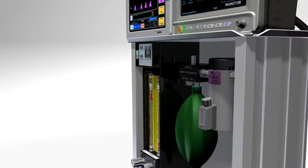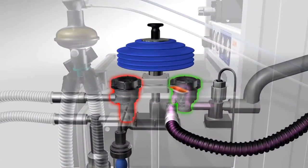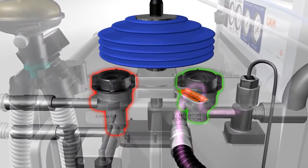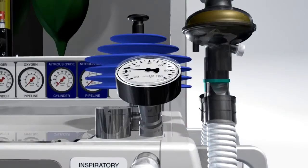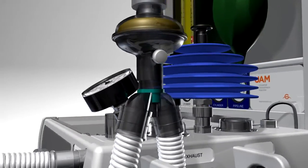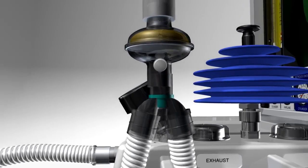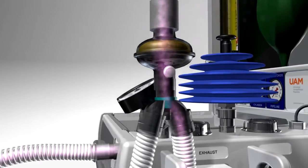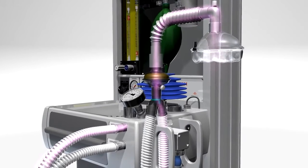Anesthetic gas is delivered to the breathing block and through the one-way valves and inspiratory limb, in the same way as the manual bellows shown earlier. The UAM uses a conventional Y-piece patient connection. The anesthetic gas flows to the patient through the Y-piece connected to a face mask, endotracheal tube, or LMA.